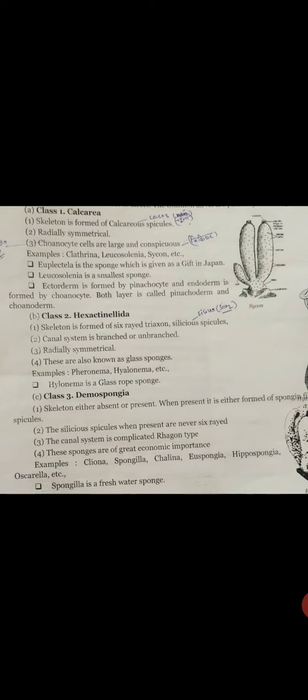Small size, below 10 cm in height. These are solitary or colonial and exclusively marine. So these are the general characters of class Calcarea: skeleton with calcareous spicules, body radially symmetrical, choanocyte cells large and conspicuous, body organization asconoid, syconoid, or leuconoid. Examples include Clathrina, Leucosolenia, Scypha, etc.